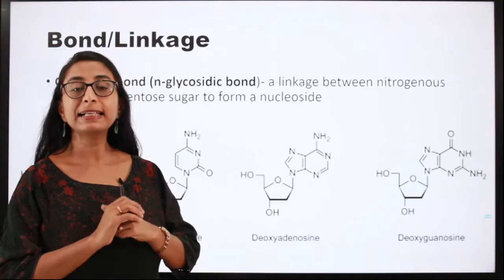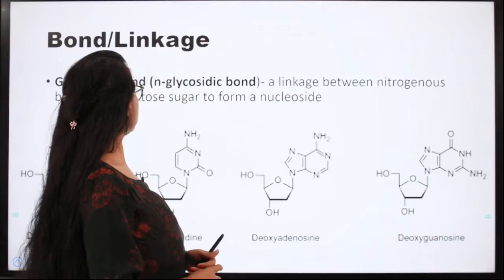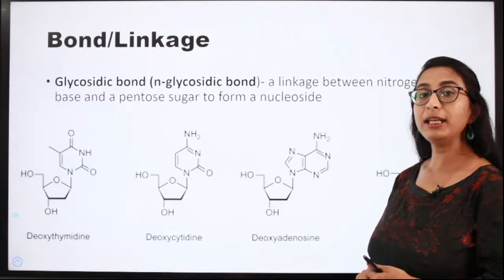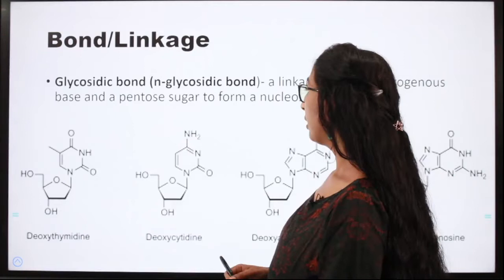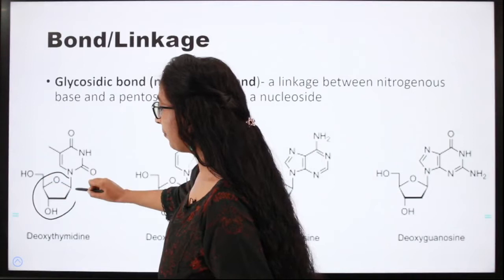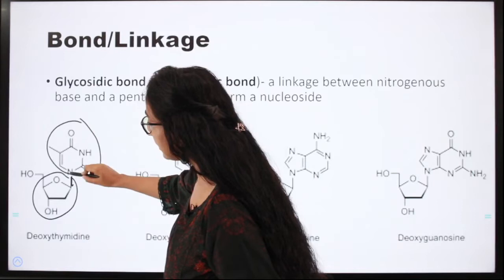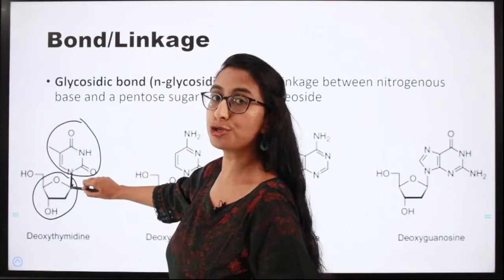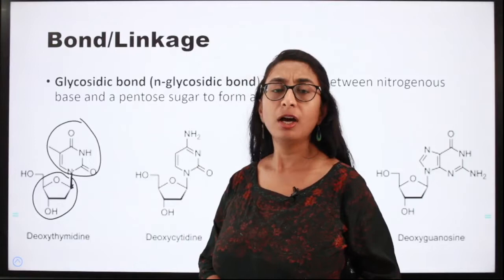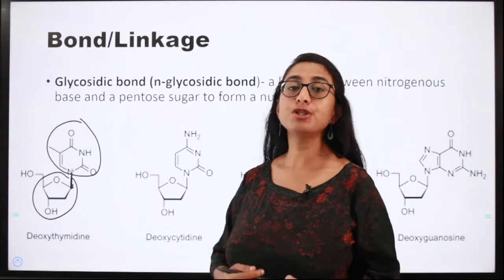In DNA we have two important bonds or linkages: one is the glycosidic bond and the second one is the phosphodiester bond. Glycosidic bonds are linkages between the nitrogenous base and the pentosugar — specifically between the nitrogenous base and the carbon-1 atom of the pentosugar. Both are formed by condensation reaction involving elimination of water.